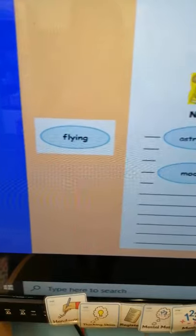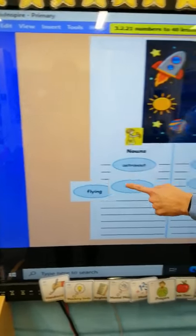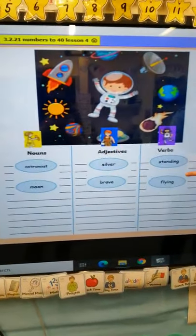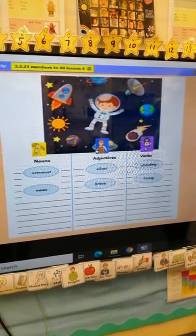And we've got one more. Flying. Hopefully you're all shouting out what that is. Is flying an adjective? Is it a noun? No, you're right. It's a verb. It's a doing word. The space rocket was flying through the sky.